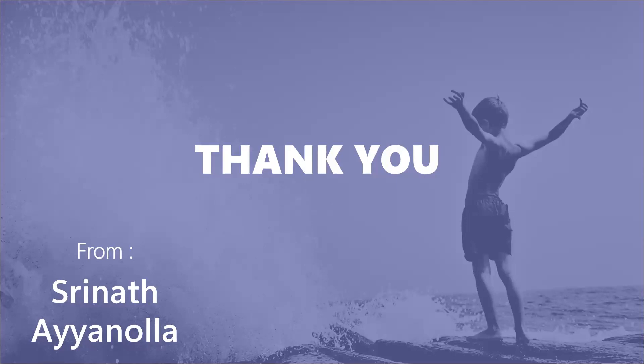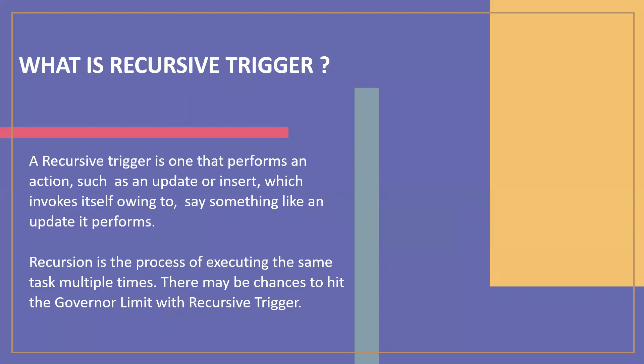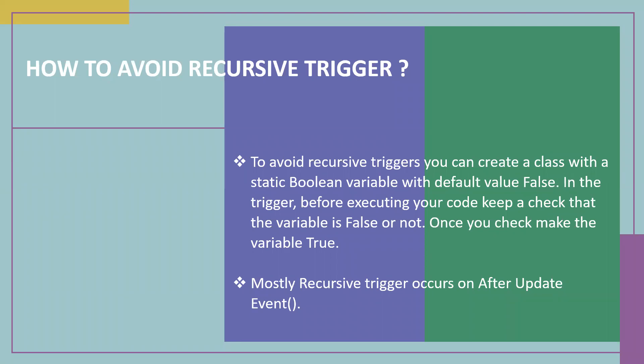If something is happening like recursion every time, how can you stop that same execution multiple times? If something is happening multiple times, you can stop it by using the static keyword. Static variables will maintain state across the transaction. Once you assign some value to the static variables, it will maintain that state across the transaction, so you can check next time if the value is false or true to stop a recursive trigger. Not only boolean static variables — you can use other types like boolean list, set of booleans, or any other type.